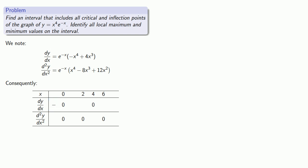Meanwhile, if x is less than zero, our second derivative will be a product of a positive number and a positive number. So the second derivative will be positive. Similarly, if we're between zero and two, e to the minus x is positive, and minus x to the fourth plus 4x cubed is also going to be positive. So the derivative is positive.